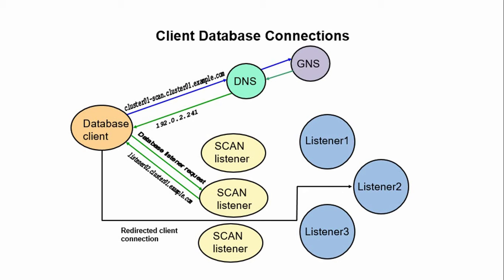In a grid plug-and-play environment, the database client no longer has to use the TNS addresses to contact the listener on a target node. Instead, it can use the EasyConnect method to connect to the database.